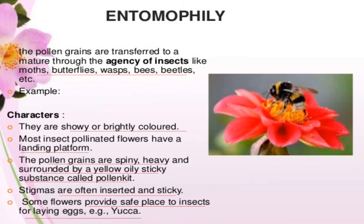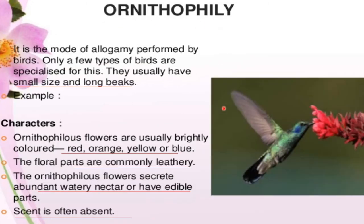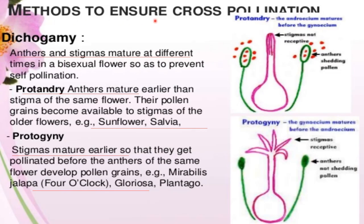An example of entomophily is yucca. Ornithophily is a mode of allogamy performed by birds. Only a few specialized bird types perform this. Ornithophilous flowers are usually brightly colored — red, orange, yellow, or blue. Flower parts are commonly leathery, they secrete abundant watery nectar or have edible parts, and scent is often absent.